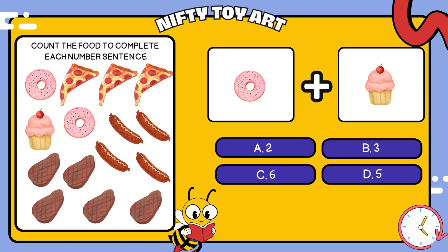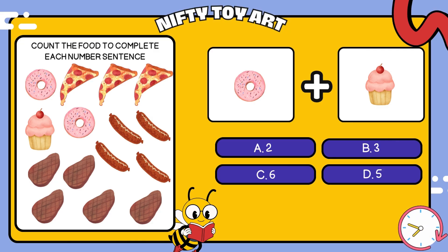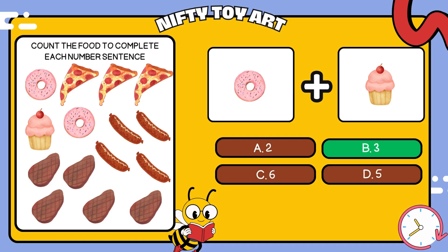We have donuts and cupcakes. How many foods is that in total? That's right, three.